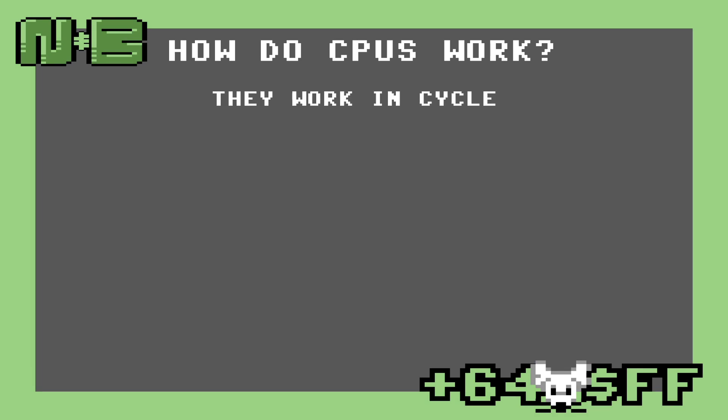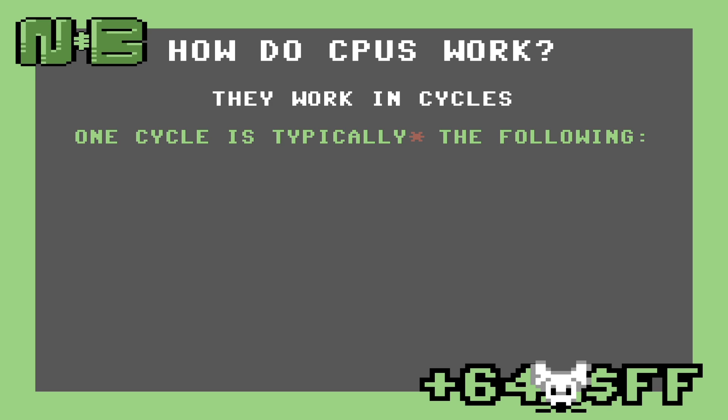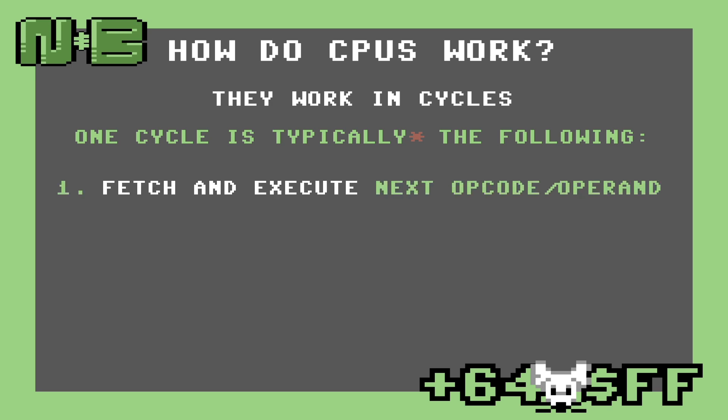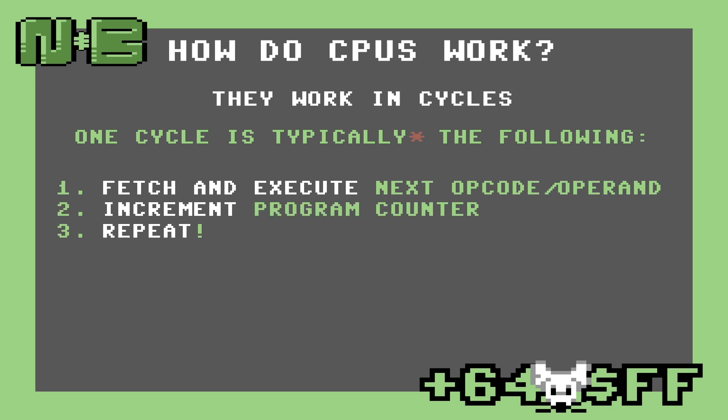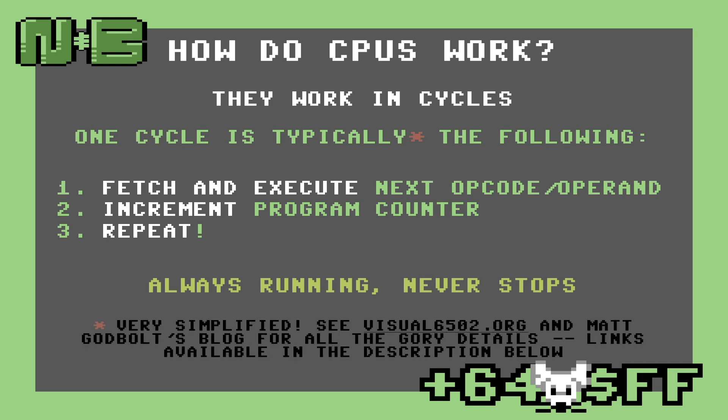Now that we have all that terminology in our heads, how exactly does the CPU make use of it? Well, the short answer is that they work in cycles. One cycle in the 8502 is typically the following steps: fetch and execute the next opcode or operand, increment the program counter, and repeat. The thing to remember is that the CPU never stops — it's always running, even when it seems like it's stopped. There's much more to a cycle than this simplified explanation, but for beginners, this should be enough to get started.